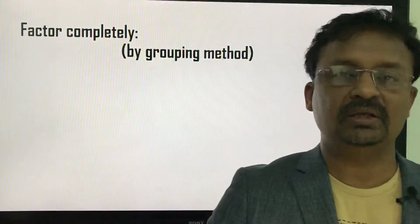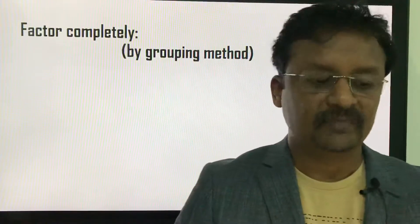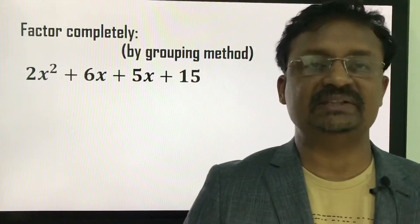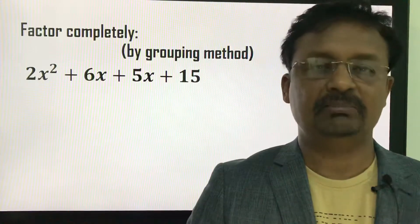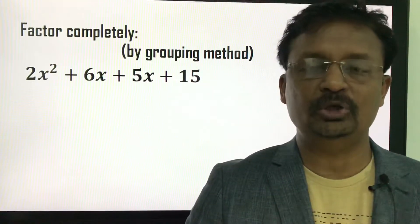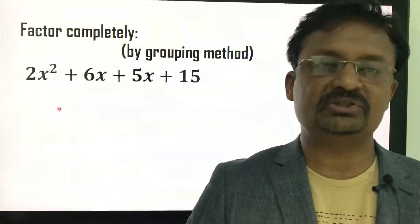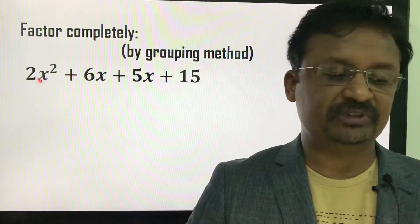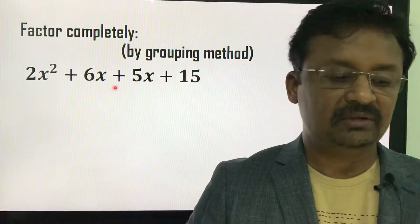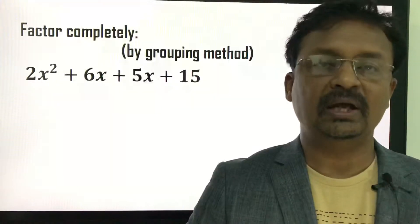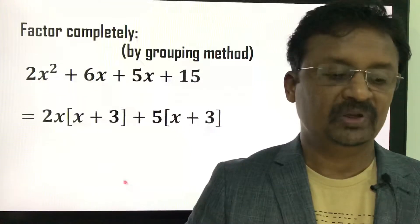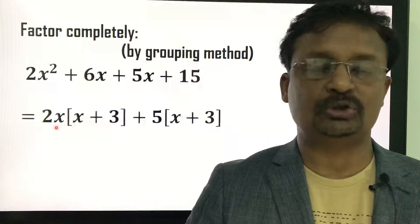Now I am dealing with the next example: factor completely using the grouping method. The polynomial is 2x² + 6x + 5x + 15. There are 4 terms in this polynomial, so we arrange them into groups. I arrange the first and second terms as one group. From the first and second terms, I take 2x as a common factor.